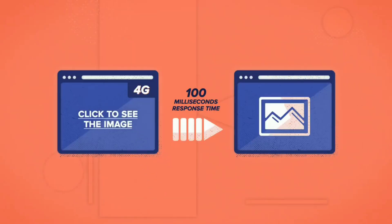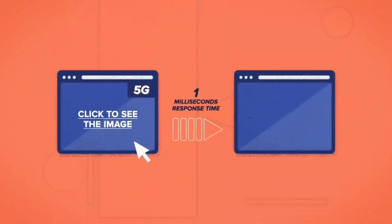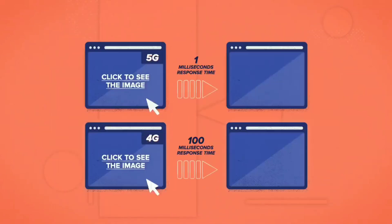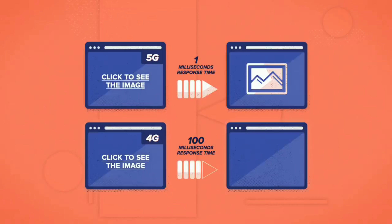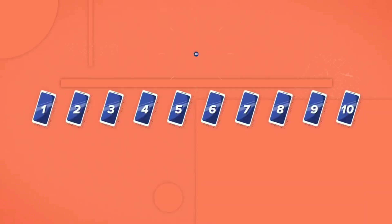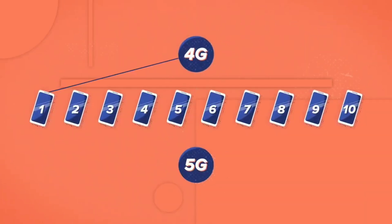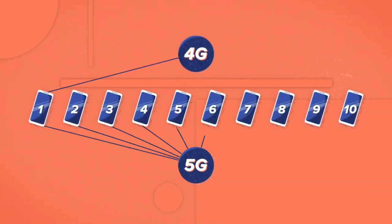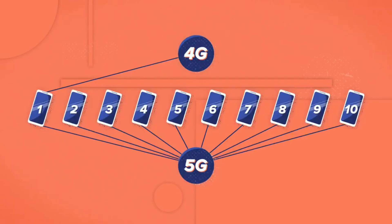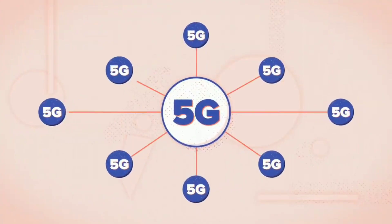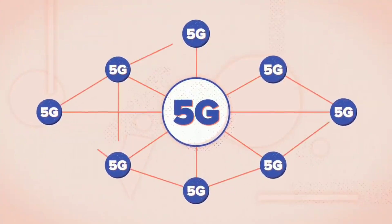5G delivers speeds of around 50 megabits per second up to more than 1 gigabit per second. A gigabit per second connection allows you to download a high definition movie in less than a minute. However, 5G is likely to carry a lot more traffic than 4G, so you still might not always get a good connection.